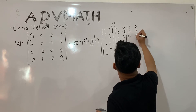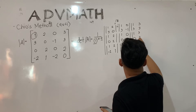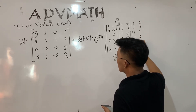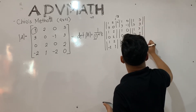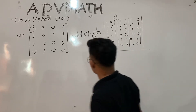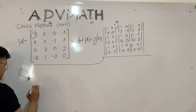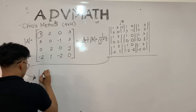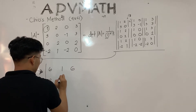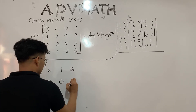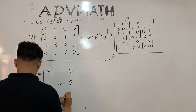As you can see, there is a pattern: the first column all share the same first row element, same as the next column and the next. After grouping the matrix, we cross multiply and subtract the first product from the second product. As a result, we get: 6, negative 1, 6, 2, 0, 2, 5, negative 2, and 6.